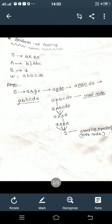Okay, we have over here three production rules. S produces small a, capital A, B, E. Then A produces b or capital A, B, C. B produces d.